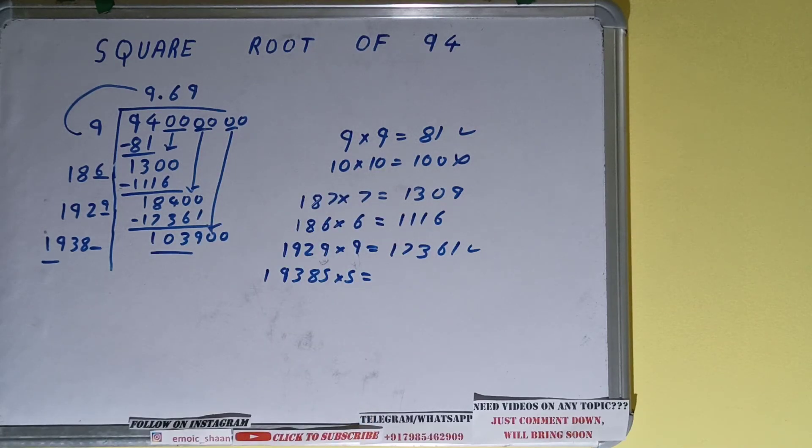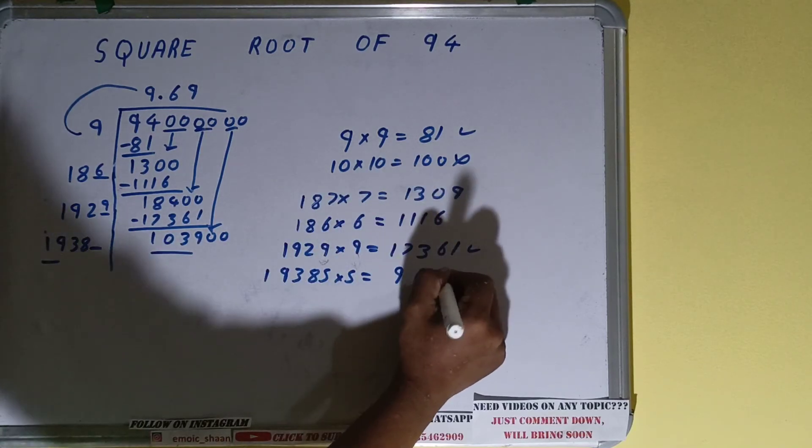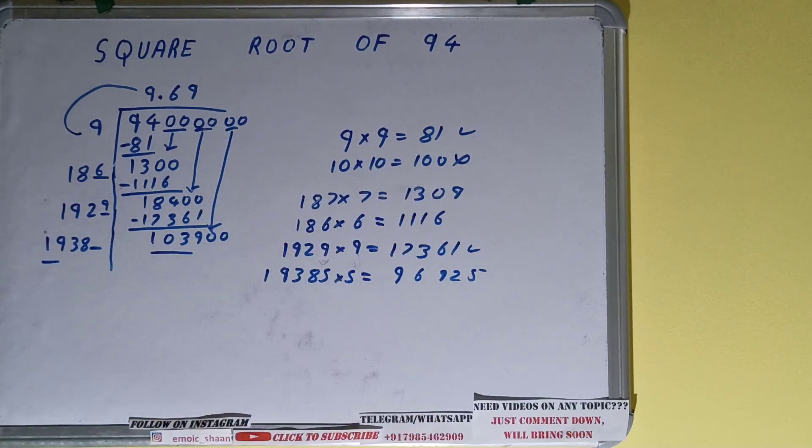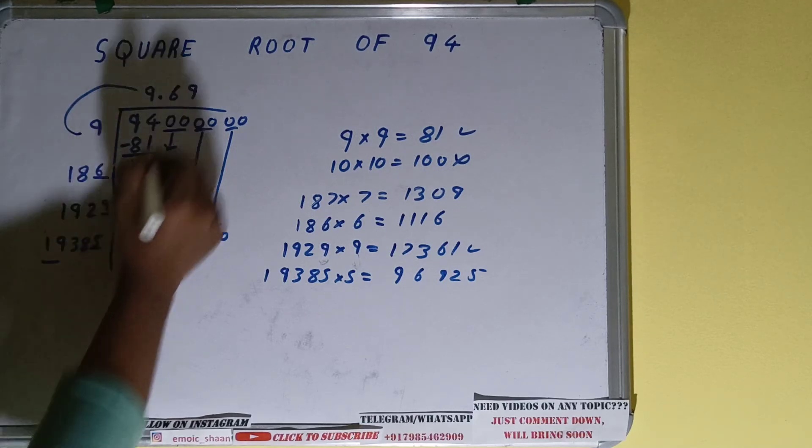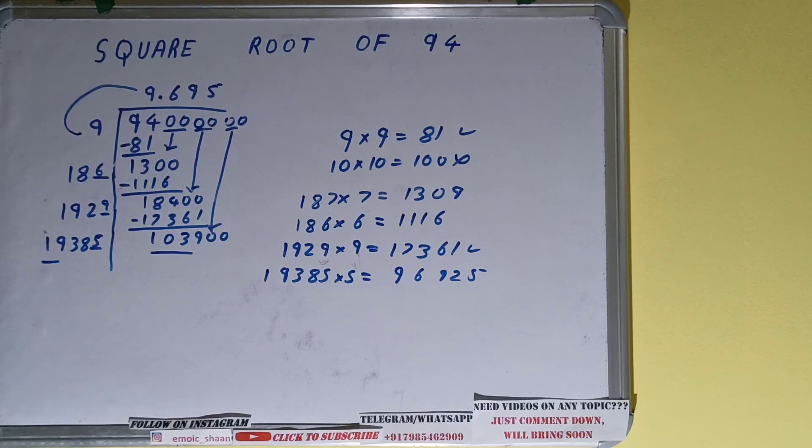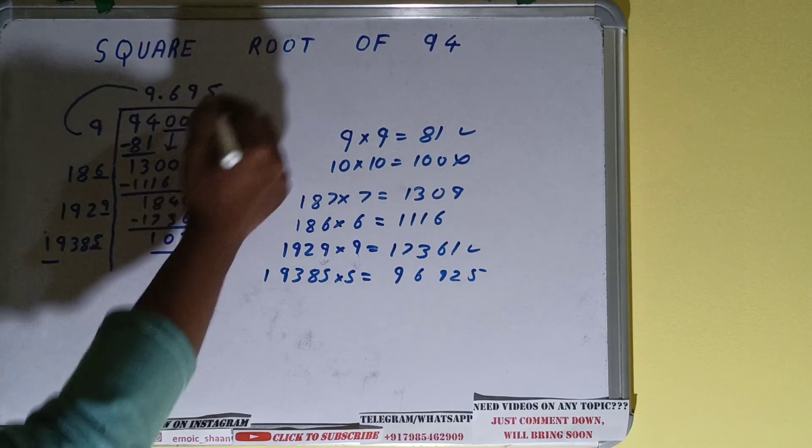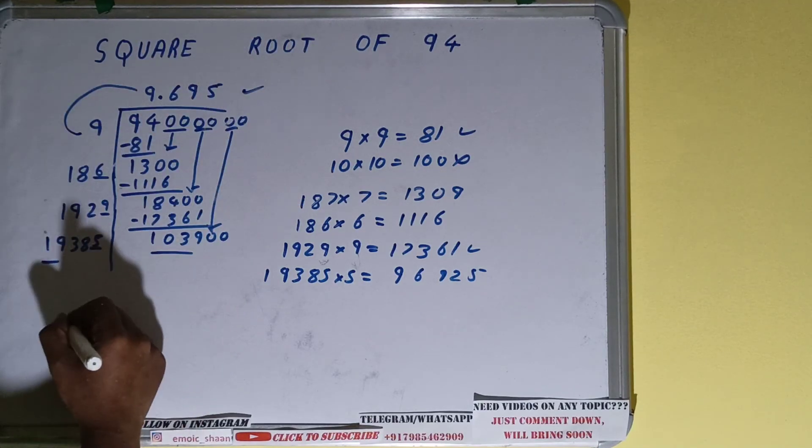19385 into 5 is 96,925. So 5 here and 5 here, but we don't need to calculate any further because we already got our answer correct up to three decimal places. So our work is done and square root of 94 will be 9.695, that's it.